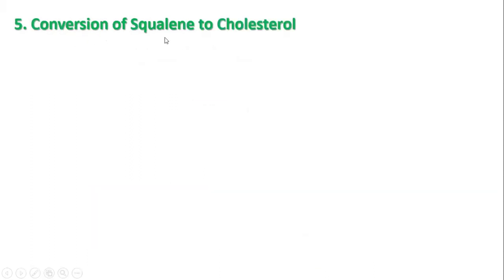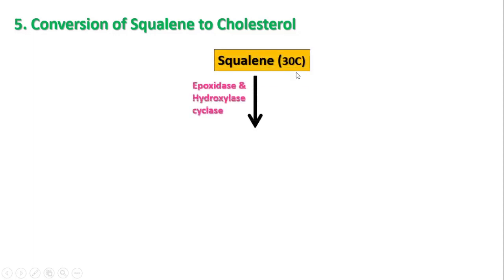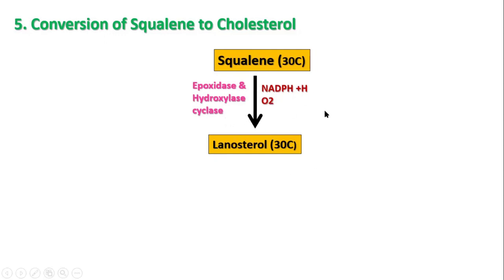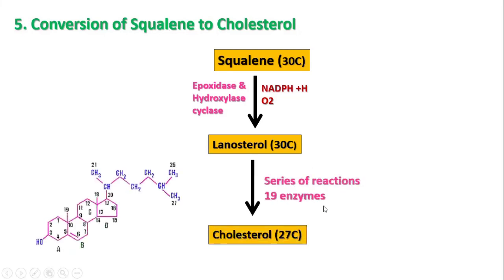Next is the conversion of squalene to lanosterol and from lanosterol to cholesterol. Squalene (30-carbon) in the presence of epoxidase forms squalene epoxide, and then with hydroxylase cyclase enzyme it forms lanosterol, requiring NADPH. Then a series of around 18 to 20 enzyme reactions convert lanosterol (30-carbon) to cholesterol (27-carbon), with a double bond at C5-C6, methyl groups at C10 and C13, and the 8-carbon isoprenoid chain.